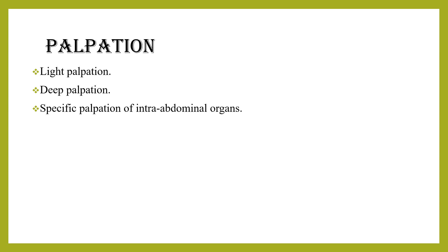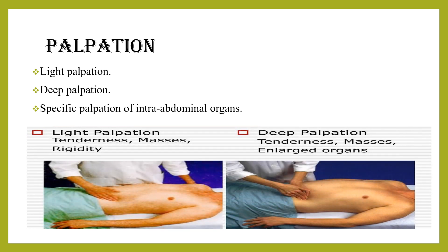Rebound tenderness is elicited when pressure on the abdominal wall is suddenly released, causing the viscera to move against inflamed peritoneum, causing pain. Appendicitis is a common abdominal surgical emergency in children; palpation at McBurney's point — located one-third of the line from the umbilicus to the right anterior superior iliac spine — may cause point tenderness. When a mass is palpated, describe its size, shape, surface, tenderness, consistency (hard or soft), edge regularity, pulsation, and mobility. To differentiate intra-abdominal from abdominal wall masses, ask the patient to rise up with hips and legs fixed in extension — if the mass is intra-abdominal, it will disappear.